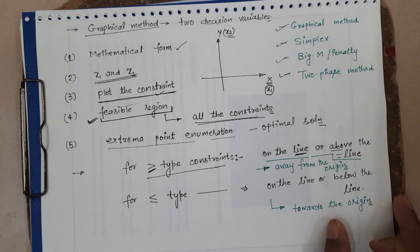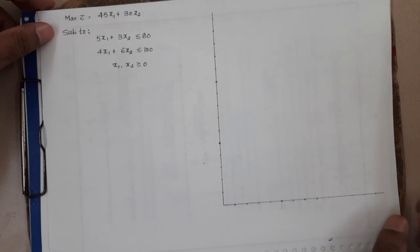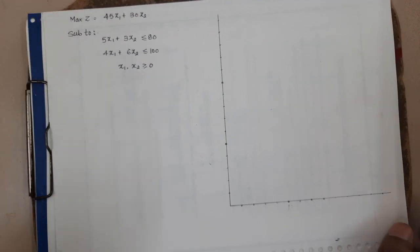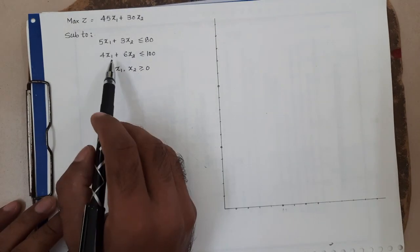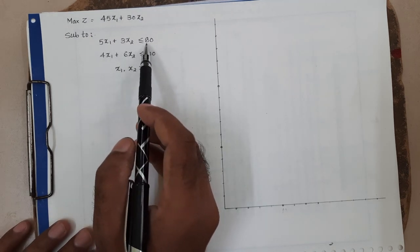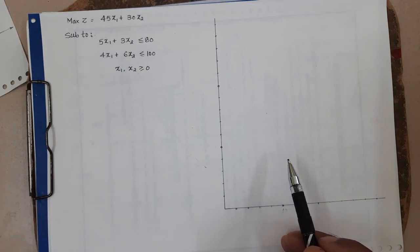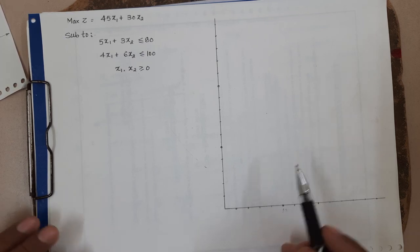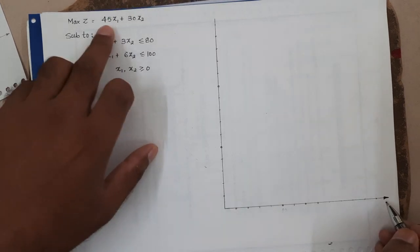Let us take an example where we will solve a problem. Suppose we have to optimize z, given as 45x1 plus 32x2, subjected to two constraints: 5x1 plus 3x2 ≤ 80, and 4x1 plus 6x2 ≤ 100. Because it is already given in mathematical form, we consider these two decision variables x1 and x2.